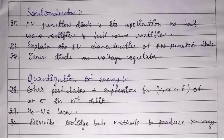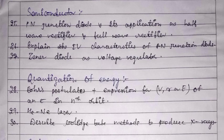In the semiconductors chapter, important derivations include: working of a p-n junction diode and its application as a half-wave rectifier and full-wave rectifier, the IV characteristics of a p-n junction diode, and use of a Zener diode as a voltage regulator.